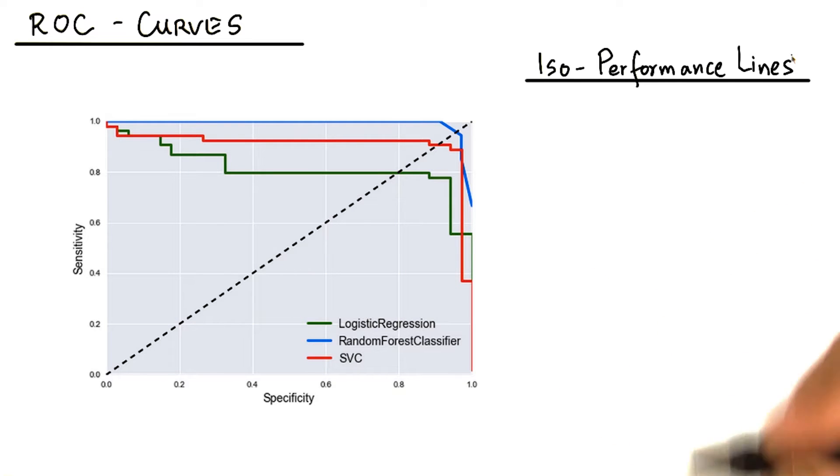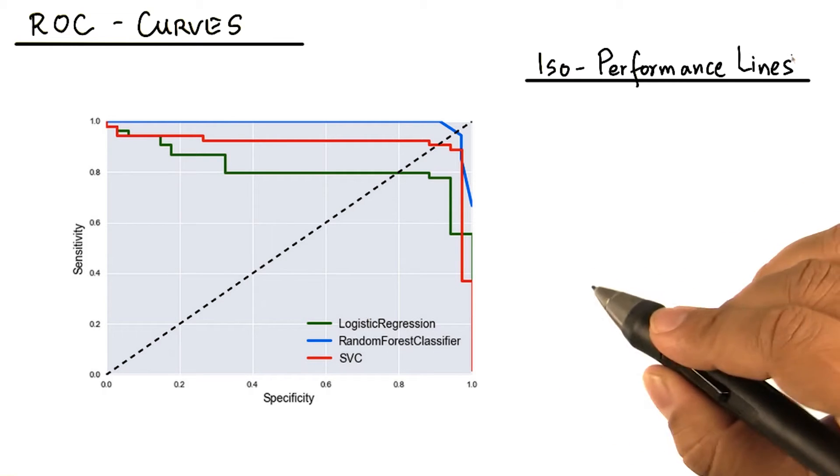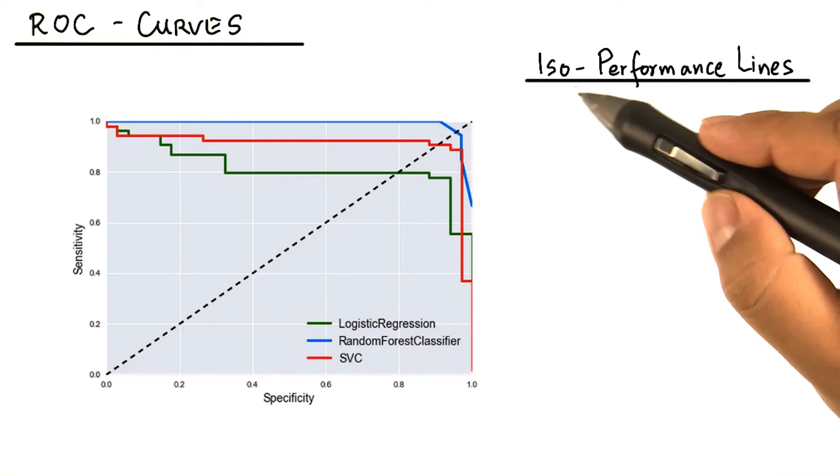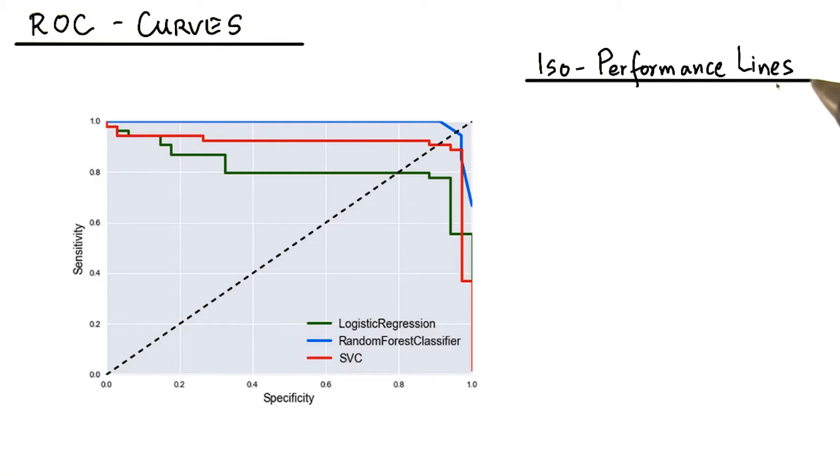Now we are going to look at two main concepts in ROC analysis. The first one is the ISO performance lines. The idea here is very simple.